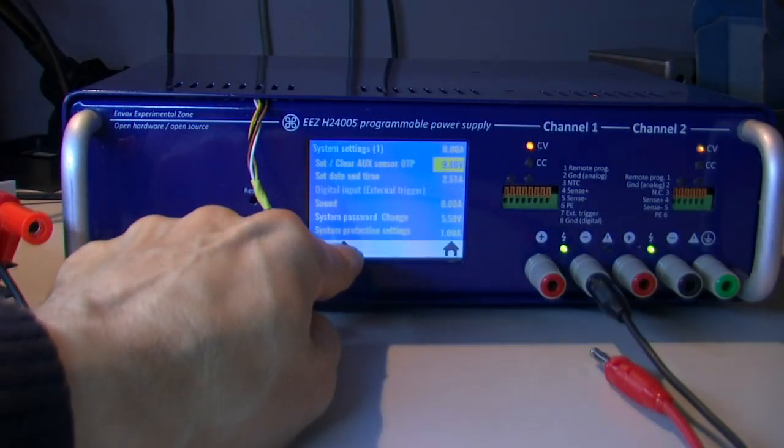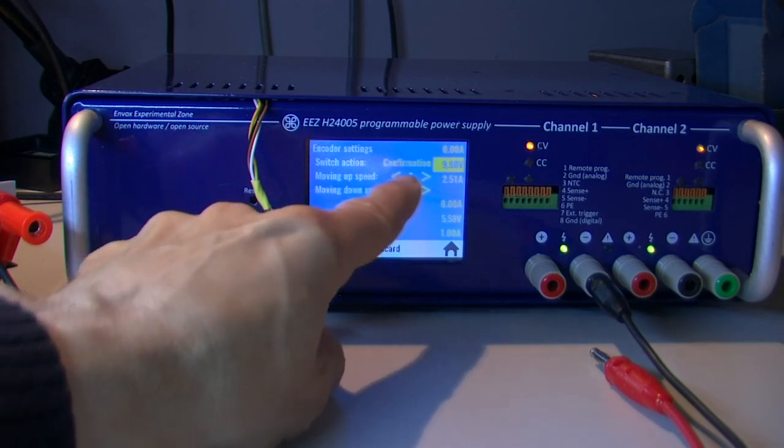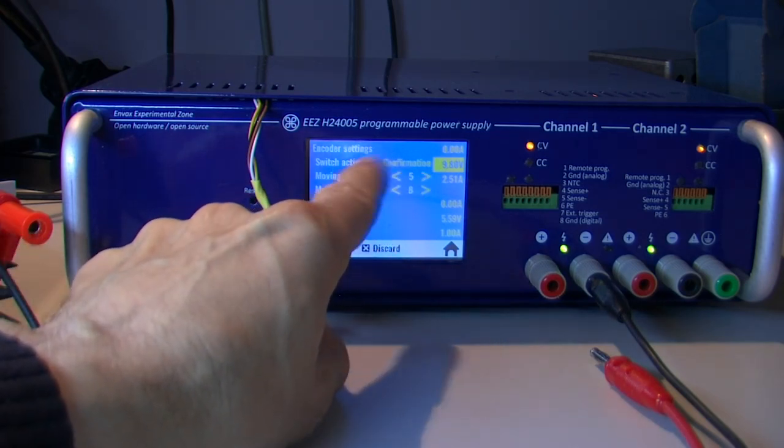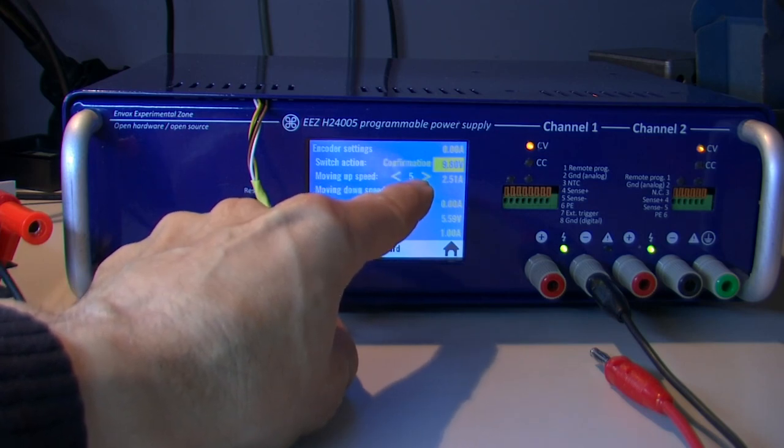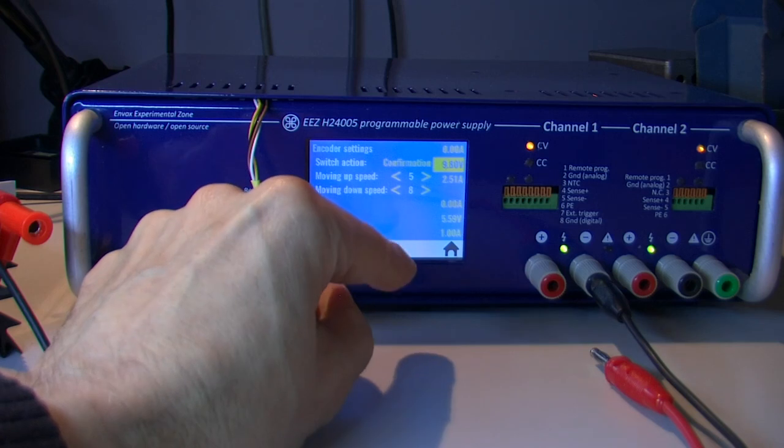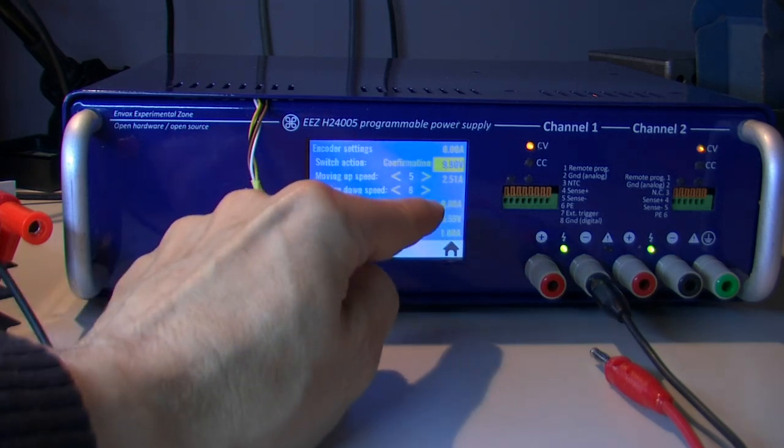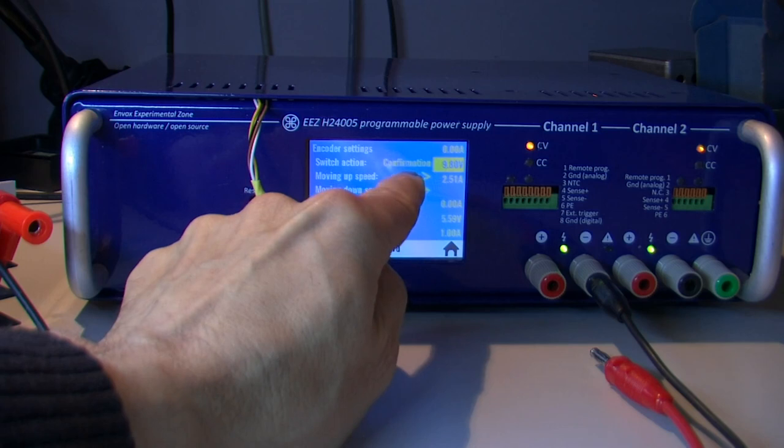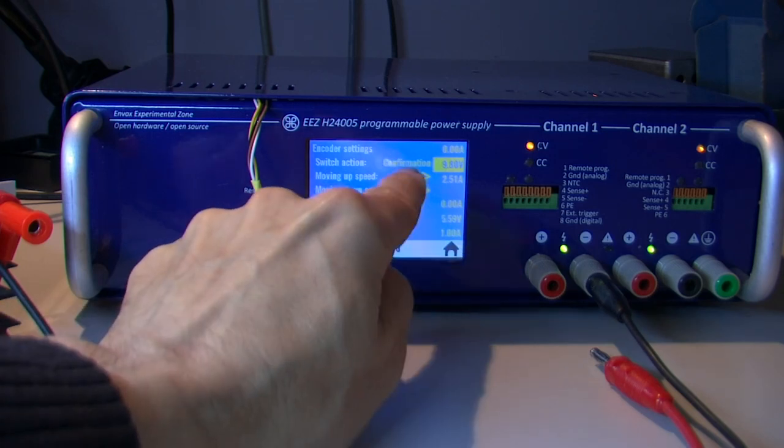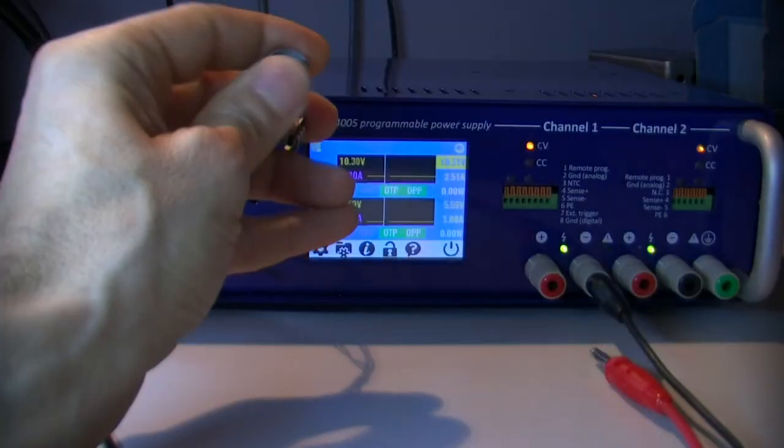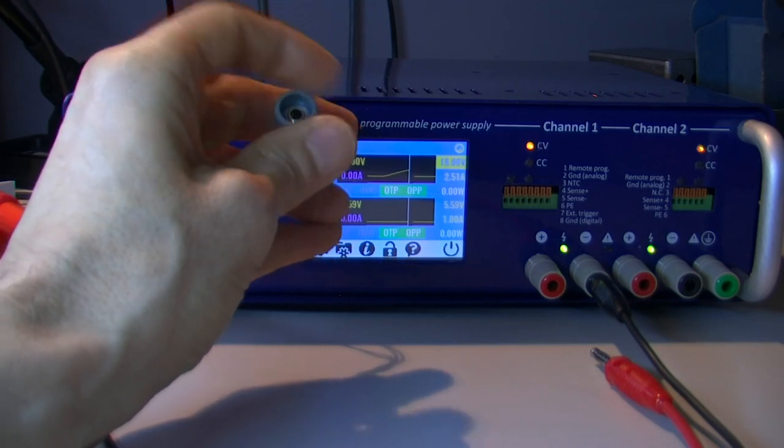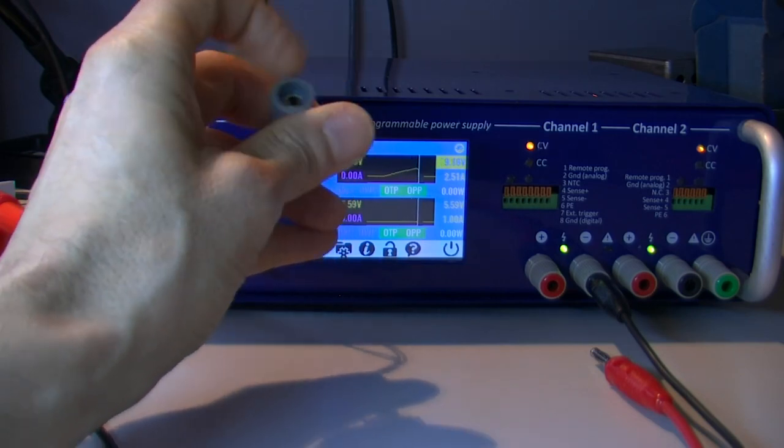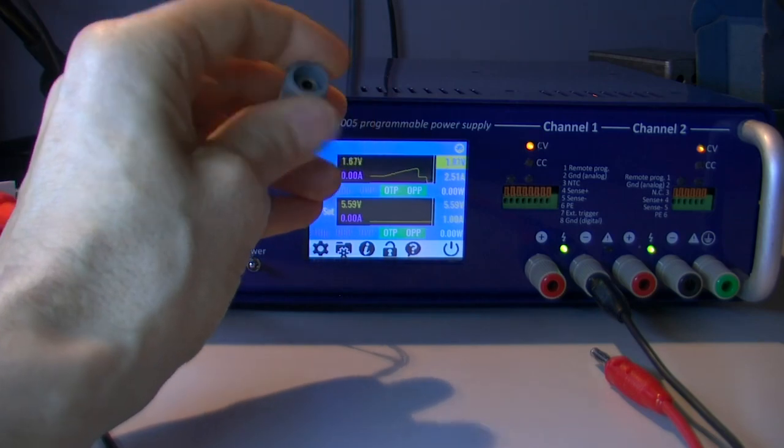And finally, we have the possibility to adjust moving up or moving down speed. Speed is from 1 to 10. One is the lowest, 10 is the highest. You can see how I will go with two extremes. You will see that I need lots of turns to go up, but for down I can go very rapidly.